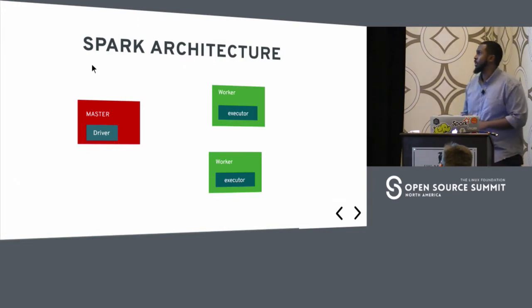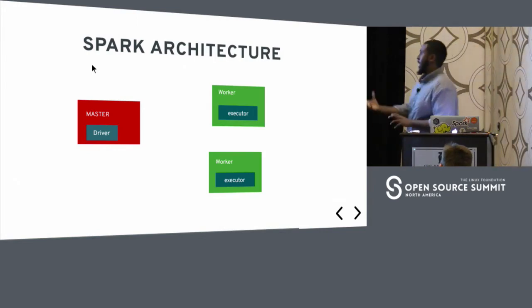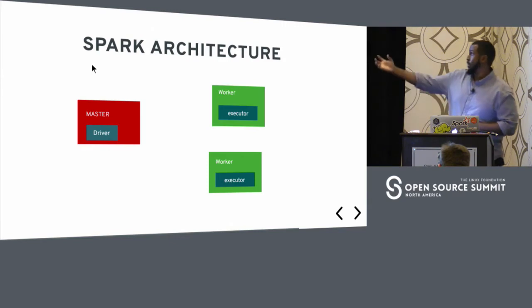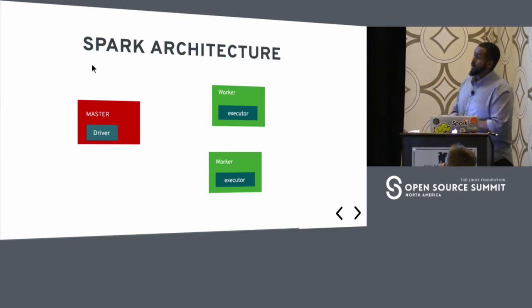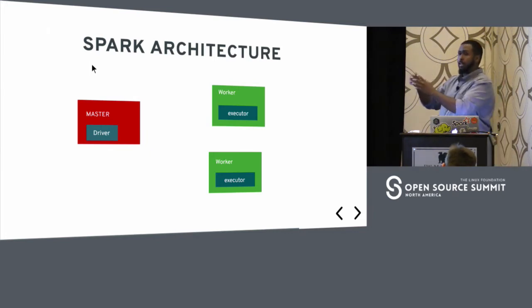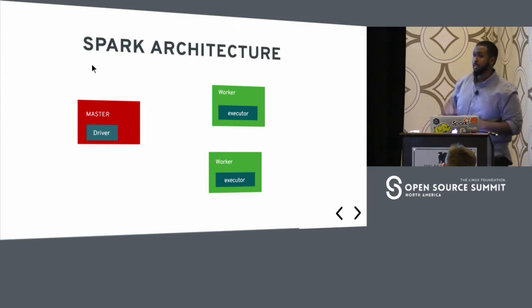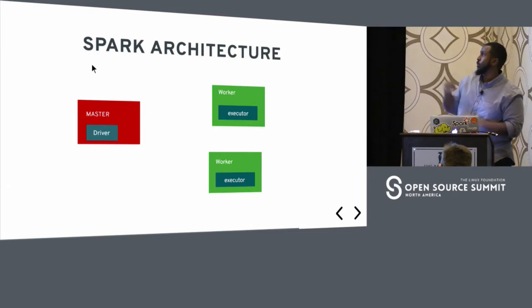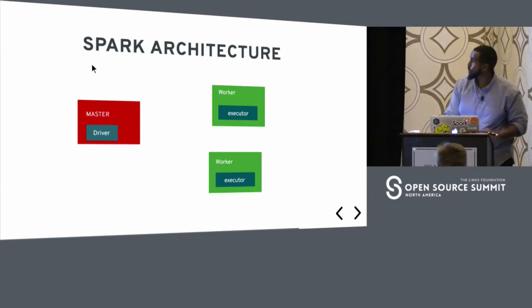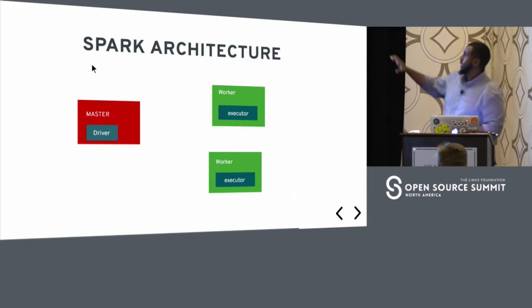Looking at the high-level architecture: we have a master and one or more workers. These workers have JVM processes called executors, and these executors execute the work. We submit a Java, Python, Scala, or R program to the cluster — we call that the driver. It gets submitted to the cluster and scheduled to run on one of the executor workers. Once the job is done, it's done in parallel. For Rad Analytics, we're running these in separate pods.